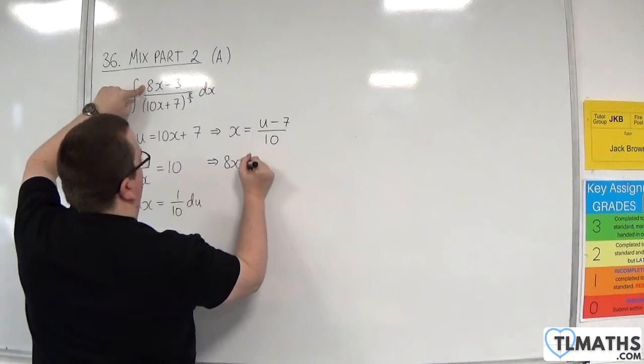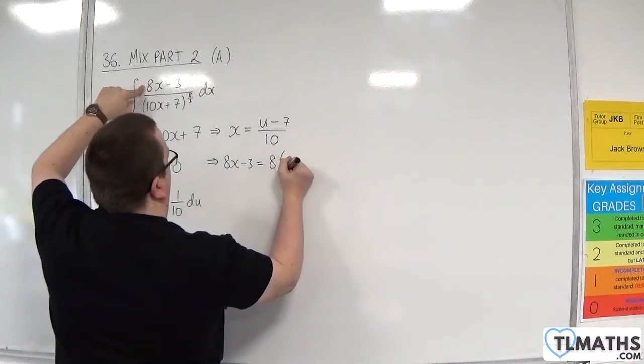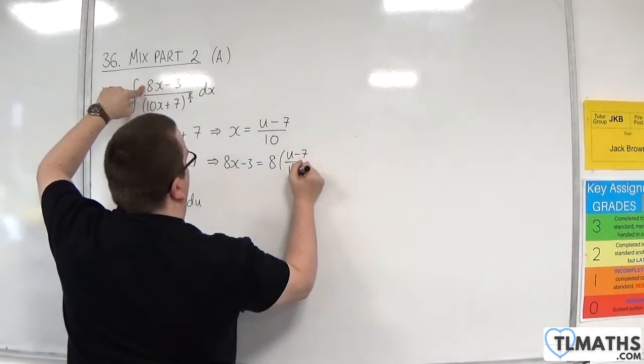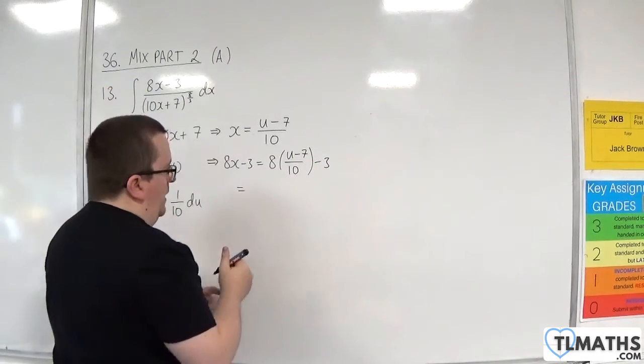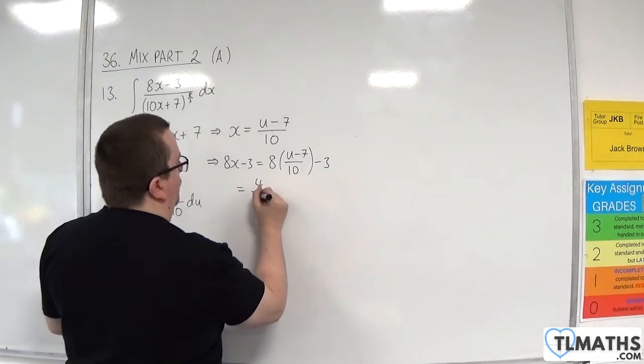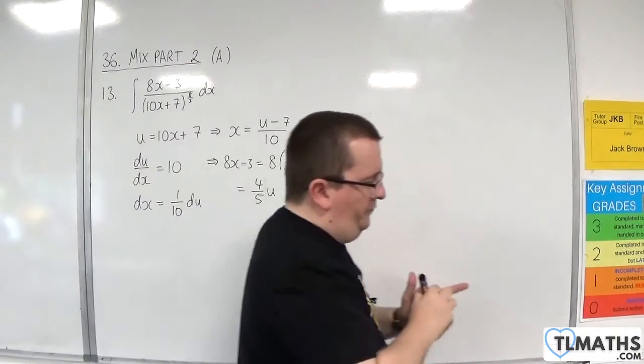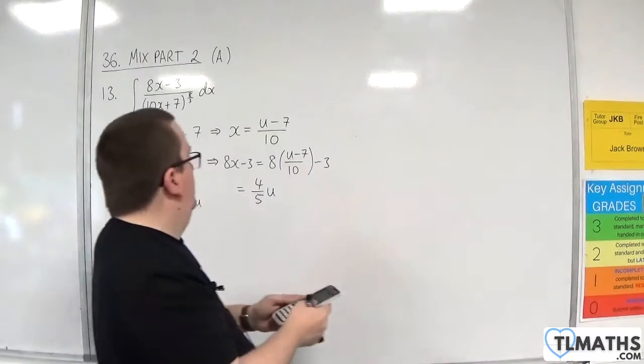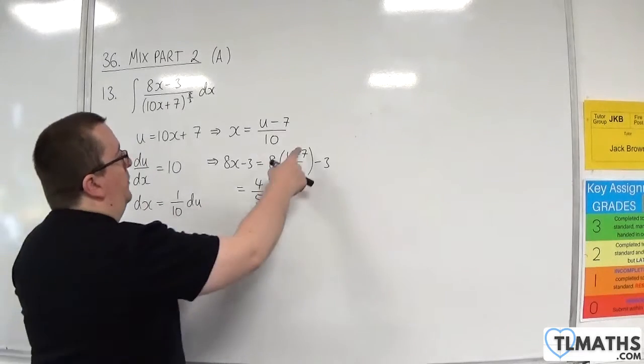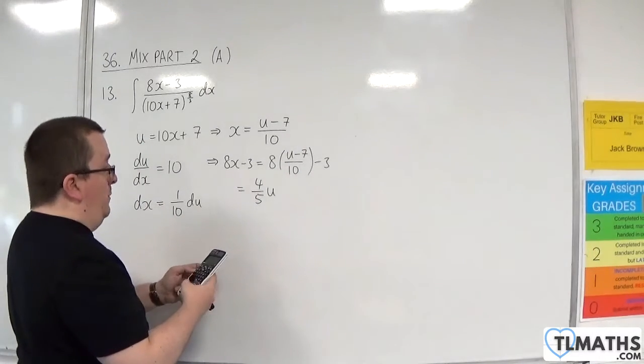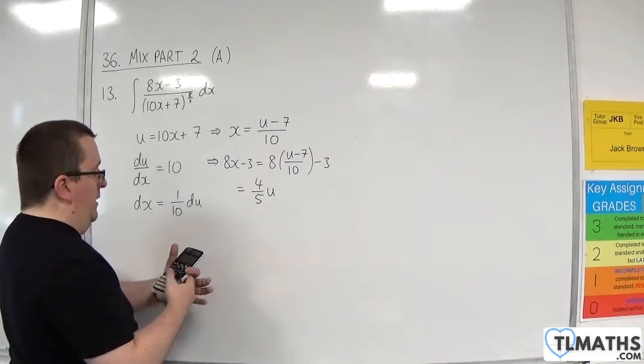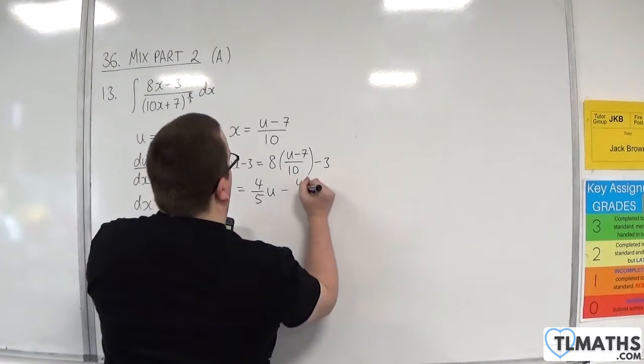So 8x take away 3 will be 8 lots of u take away 7 over 10, take away 3. So we've got 8 tenths times u, which is 4 fifths u, and then we've got 8 times minus 7 over 10, and then we're taking away 3. So that's minus 43 fifths.